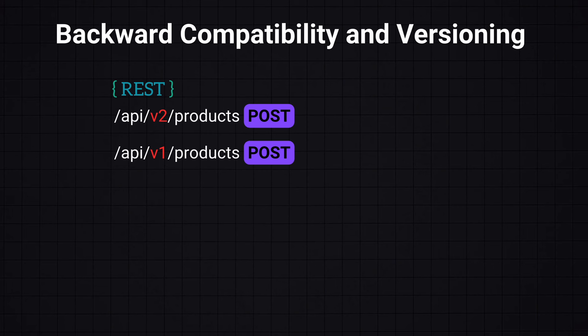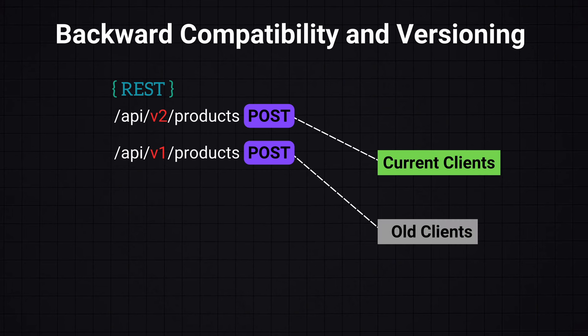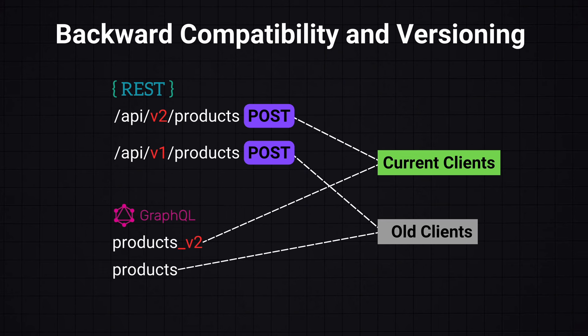When modifying endpoints, it's important to maintain backward compatibility, ensuring that changes don't break existing clients. A common practice is to introduce new versions like /v2/products, so that the v1 API can still serve old clients and the v2 API serves current clients. In the case of GraphQL APIs, adding new fields without removing old ones helps evolve the API without breaking existing clients.